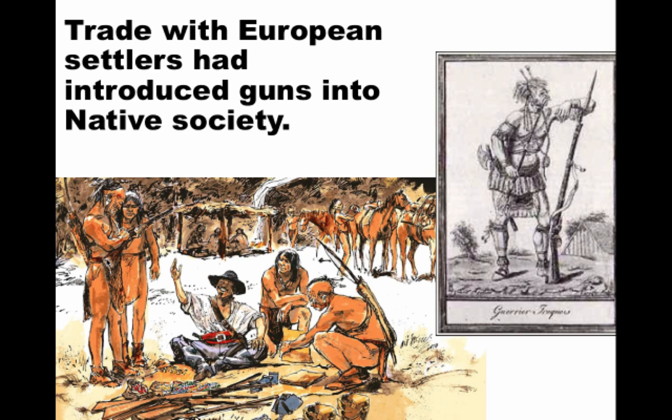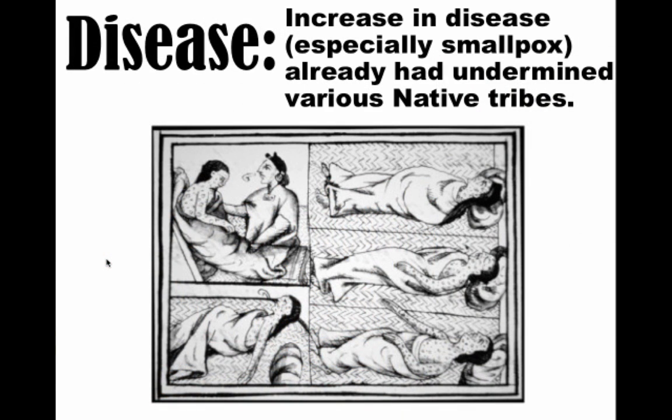Another factor contributing to this is that even before these colonies got established, contact with European fishermen and explorers had led to disease and a huge decline in the population. No one knows the exact numbers for sure, but the population of Native people, especially the Iroquois and other northeastern tribes, had dropped significantly. Smallpox was the big one, but other diseases as well.